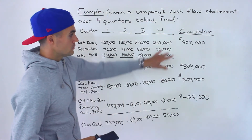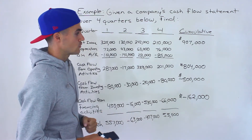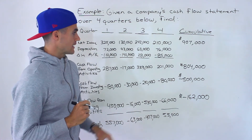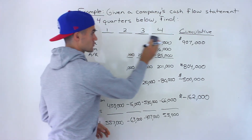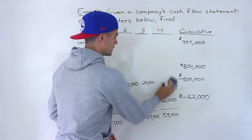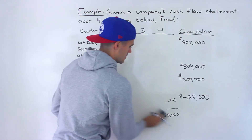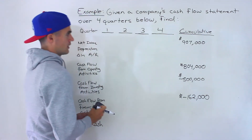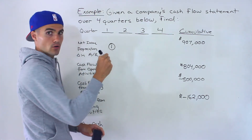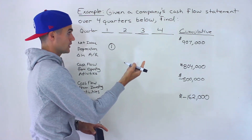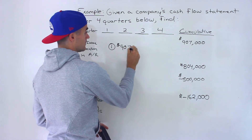Now we just need these four figures to answer those three questions. Number one was asking what are the cumulative earnings? It's just the $907,000. So that's the answer for number one.